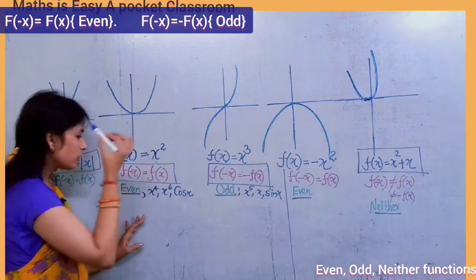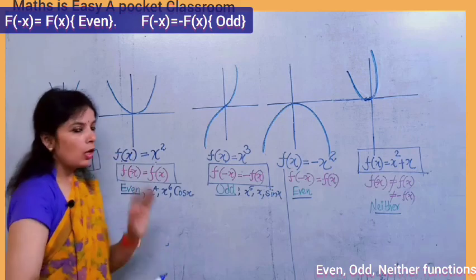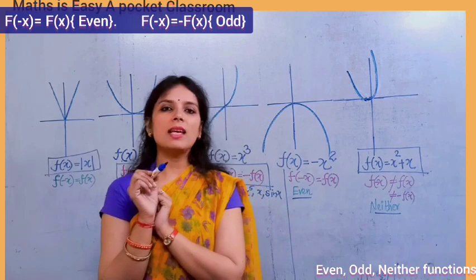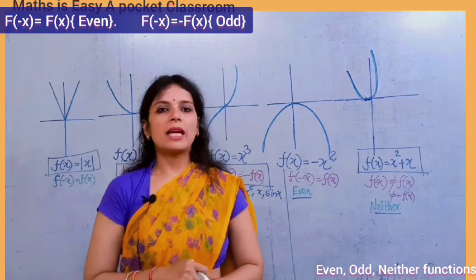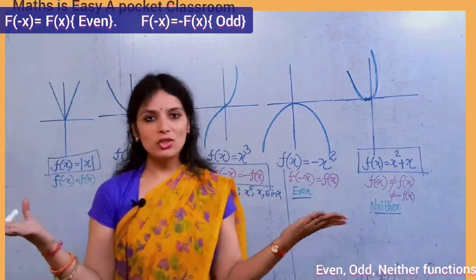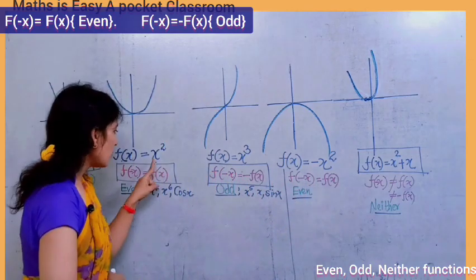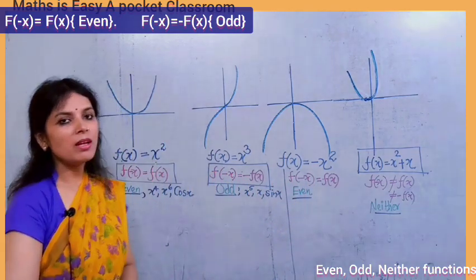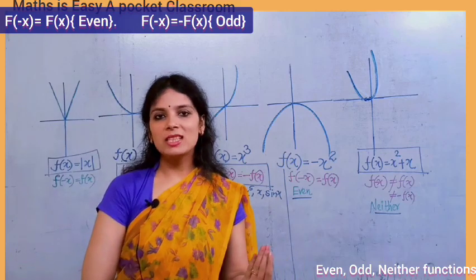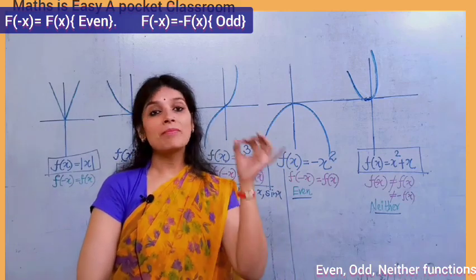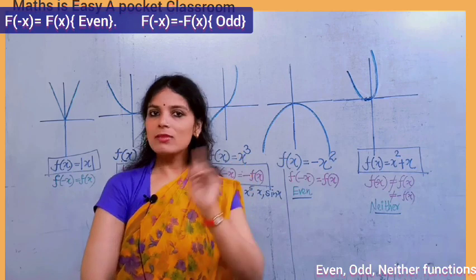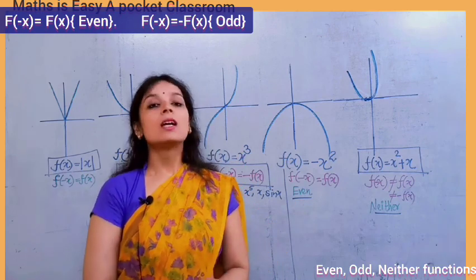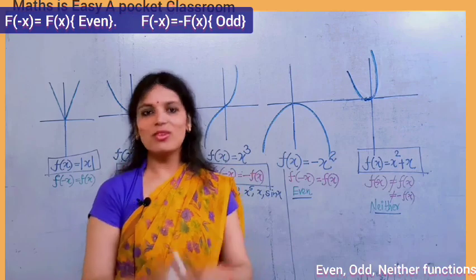For example, x², x⁴, and x⁶ — all even powers of x. If we put x equal to minus x in these functions, the function remains unchanged. In all these examples — x², x⁴, x⁶ — the function would not change if we substitute x with negative x. Since the function remains unchanged, these are even functions.